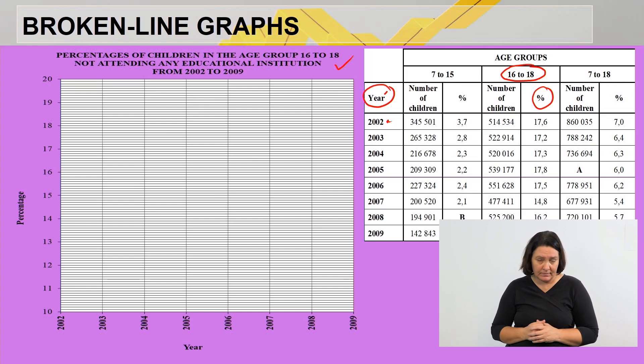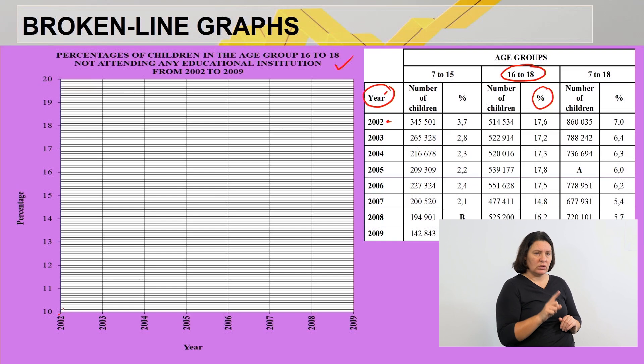Let's plot that point. 2002 is here, we agree. Let's find out what our intervals are: it's 0.1. I'm looking for 17.6: 17.1, 0.2, 0.3, 0.5, 0.6. So that will be the first point for 2002. Moving now to 2003, it is 17.2. So 2003, let's look for 17.2: there's 17.1, 0.2, are we fine?